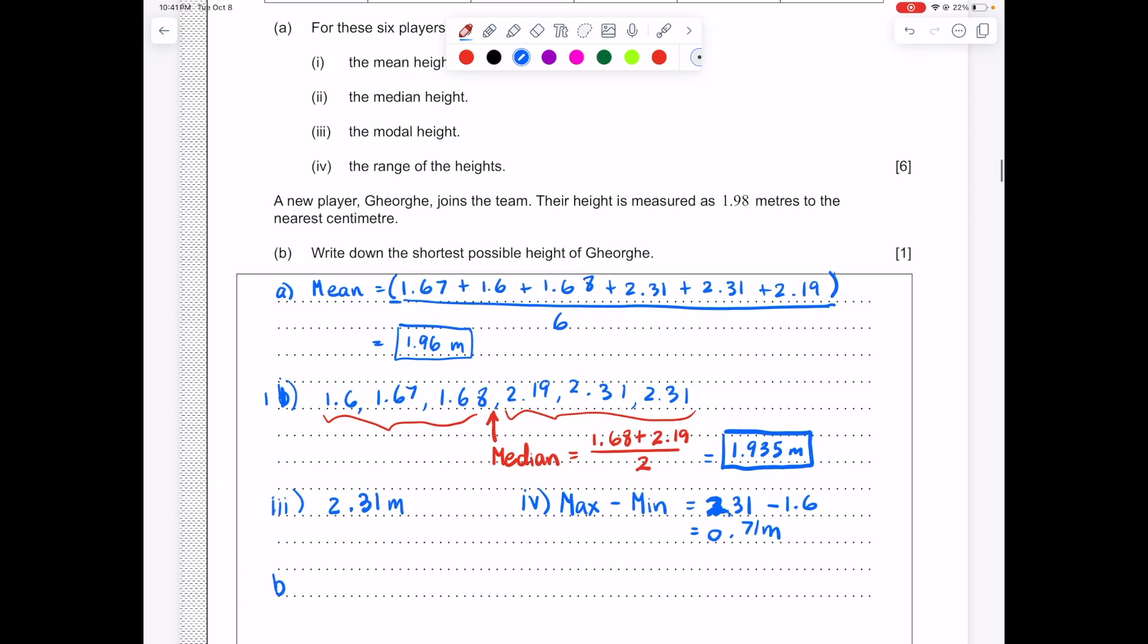Alright, so now the final part, part B. It says write down the shortest possible height of this person. Now that makes no sense standing alone. These IB questions, you'll notice there's sometimes a little standalone section that usually goes with what comes afterwards. So a new player joins the team and their height is measured as 1.98 meters to the nearest centimeters. So this is a rounded number.